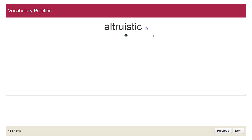Hello guys, welcome to another vocabulary practice video tutorial. In this video tutorial we are going to talk about the word altruistic. Let's pronounce the word first. Altruistic actually means unselfish.